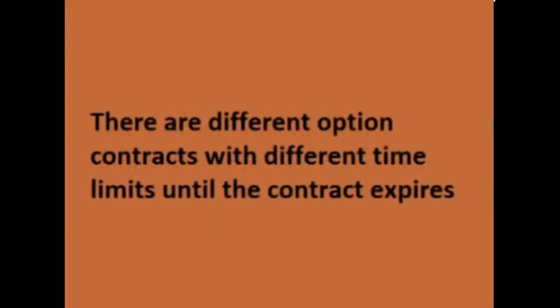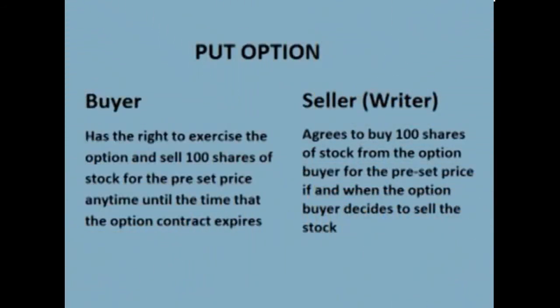When someone buys an option, there is a time limit on how long the buyer has to exercise or use the option. The longer the time limit, the more the contract costs to buy. Just like a call option, when someone buys a put option, they are also buying a contract from the contract writer, also called the seller. The contract states that the option buyer is entitled to sell 100 shares of a particular stock for a preset price. The contract also states that the option seller agrees to buy that stock from the option buyer at the preset price, if and when the option buyer decides to sell it, up until the time the contract expires.